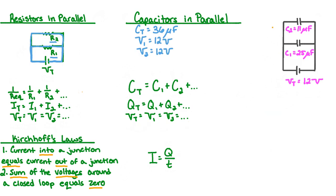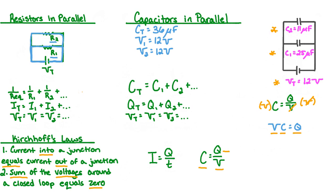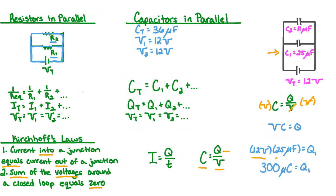Let's also look at how much charge is stored not only in each of the capacitors, but also in the total charge of the battery. To determine these values, we first need to remember the equation that relates capacitance C, charge Q, and potential difference V. We need to rearrange the formula C equals Q over V to solve for charge Q by multiplying both sides of the equation by V, leaving us with Q equals V times C. Let's start with capacitor C1. The potential difference across C1 was 12 volts and the capacitance is 25 microfarads. When we multiply 12 volts by 25 microfarads, we get a charge Q1 of 300 microcoulombs.